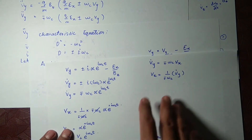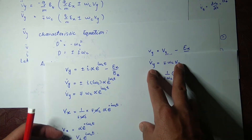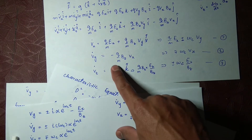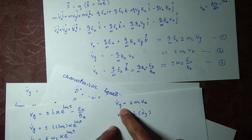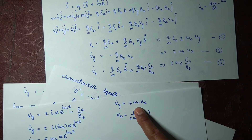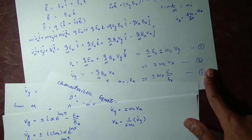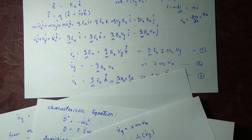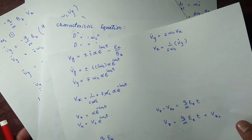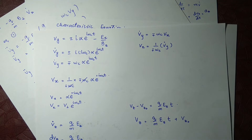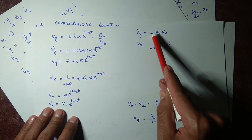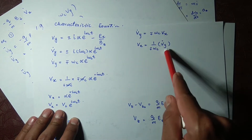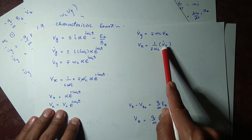We have the coupled equation number two. In equation number two, v_y dot equals minus/plus omega_c times v_x. From this equation, v_x equals this term in the denominator divided with this term.